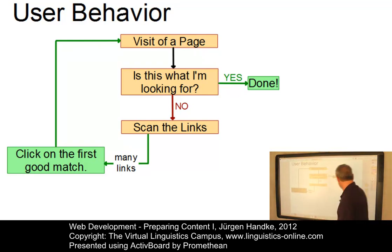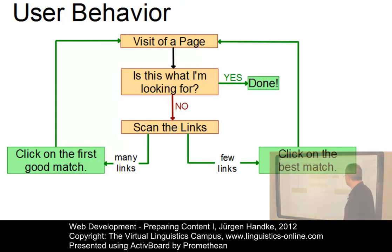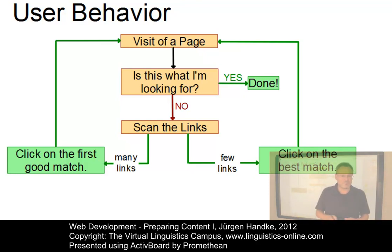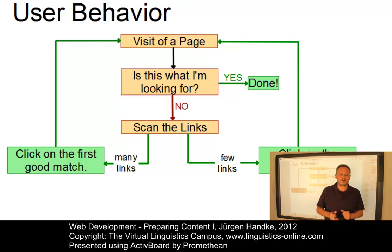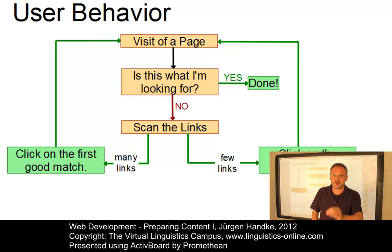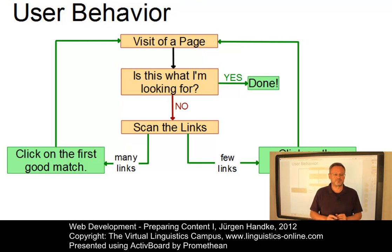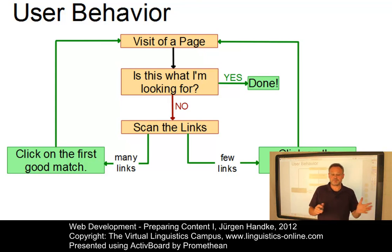If there are many links, users normally click on the first good match. If not, they might take the best match. In both cases, they visit a new web page and the whole cycle starts all over again. This process will sometimes take place within just a few seconds, depending on the content presented on a page. In summary, users will not spend too much time on a page if it doesn't seem to contain what they're looking for, and they'll click on the first good match rather than browsing all links.